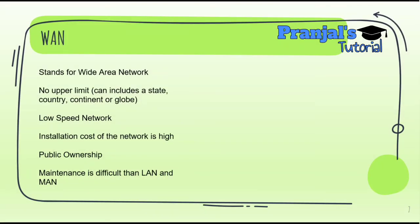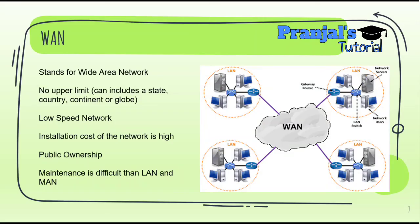The next network is WAN — Wide Area Network. There is no fixed area limit. WAN can cover a state, country, continent, or even the entire globe. It is a low-speed network compared to others. The installation cost and maintenance cost are the highest among all network types, and it is a complex network to maintain.